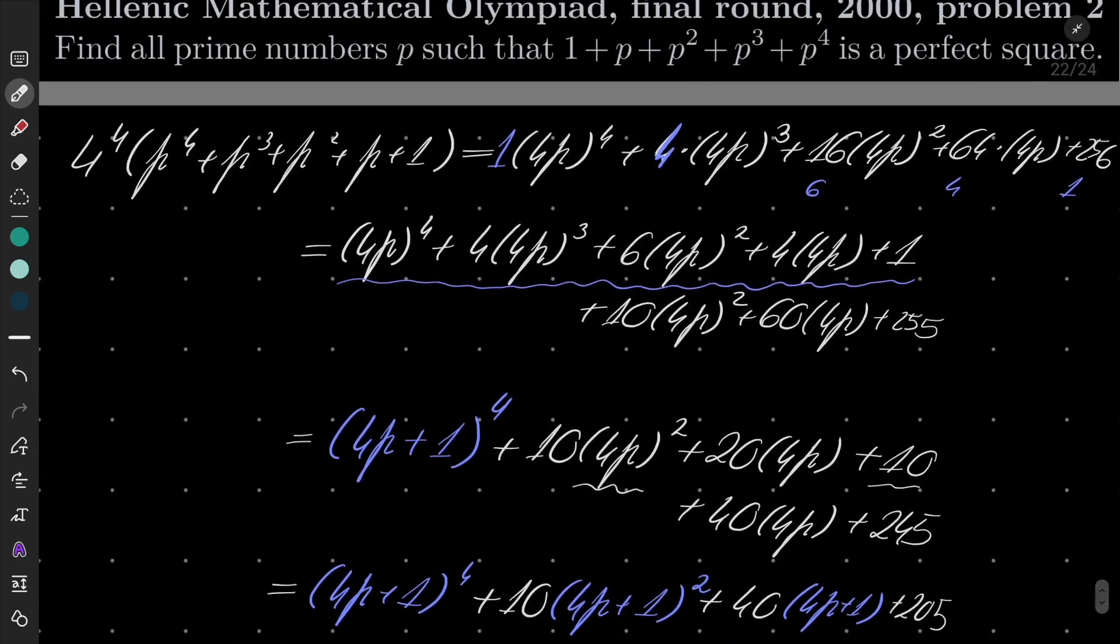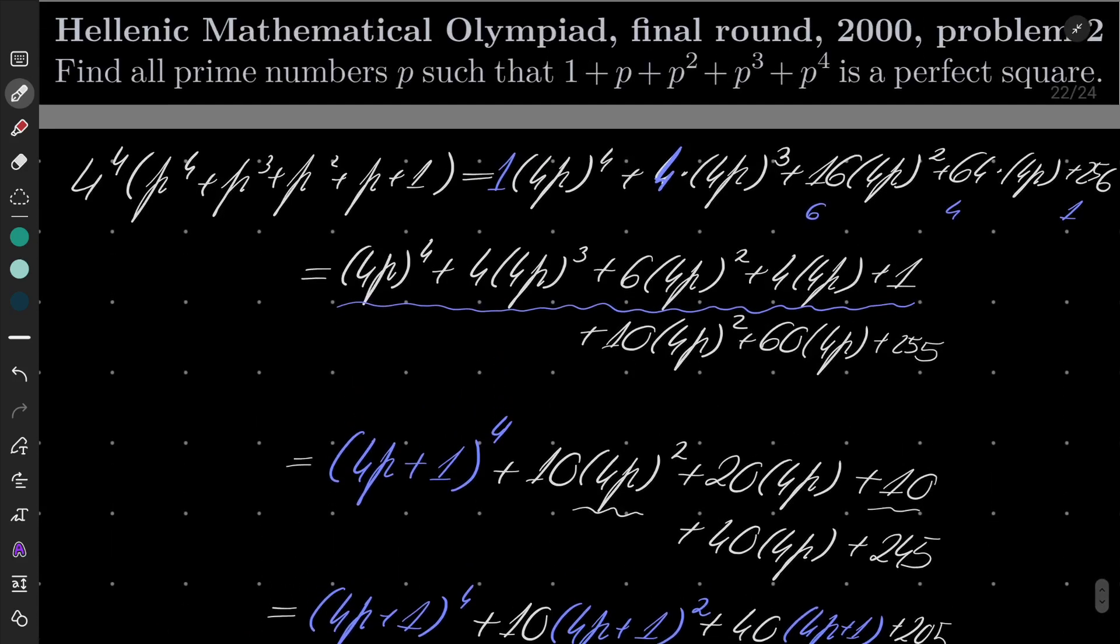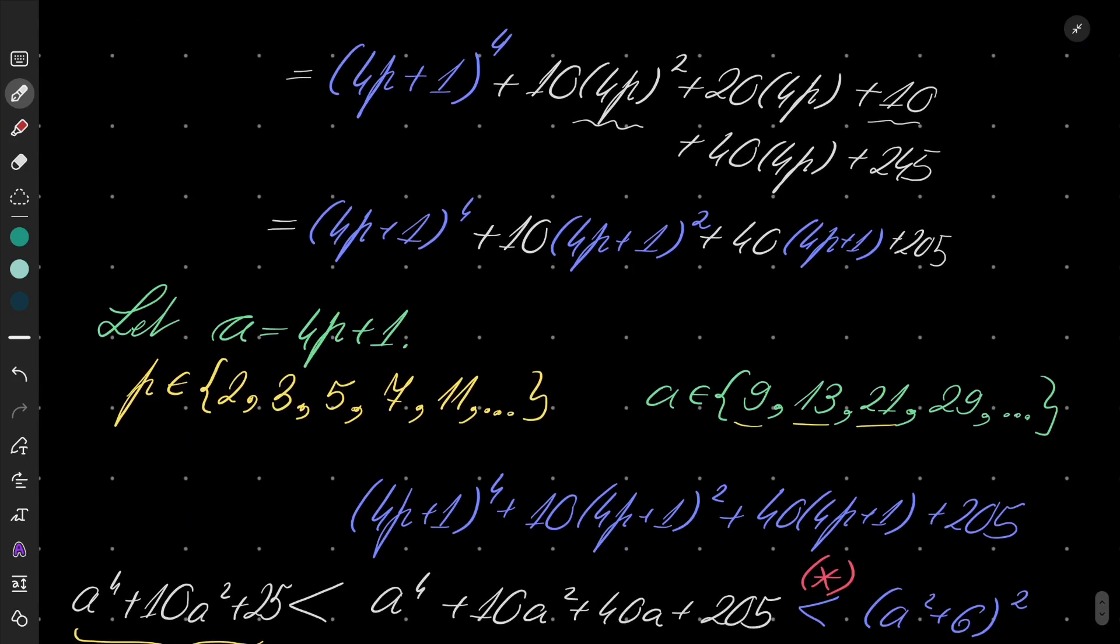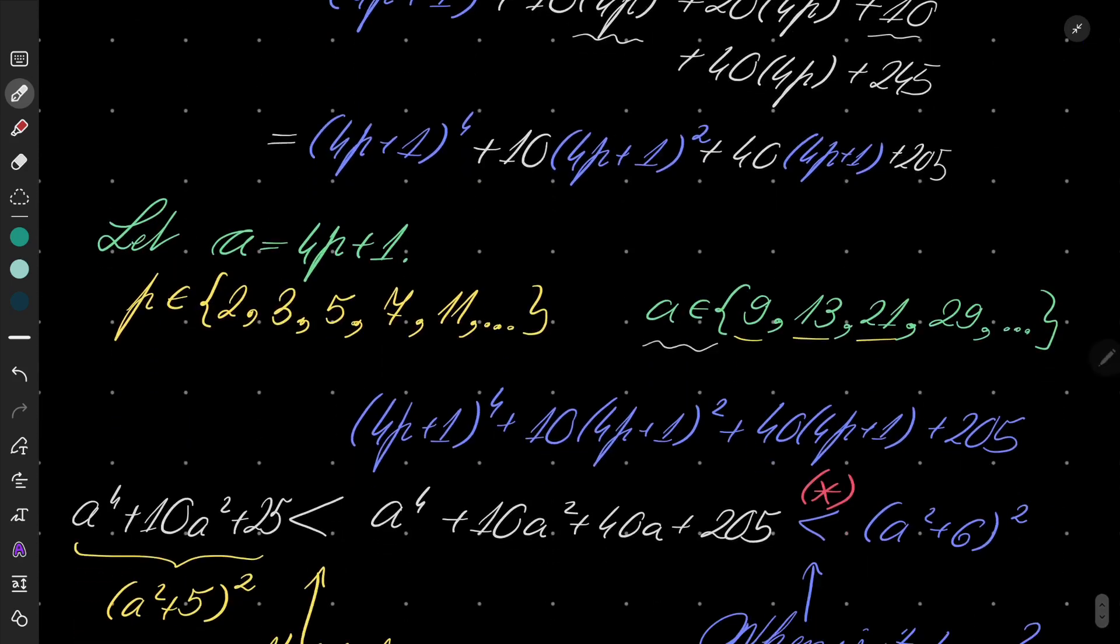And also, challenge for you, maybe, because we were considering only prime numbers. Well, there was no particular reason just to constrain ourselves to primes. Because our reasoning, we have used the property that p is prime only in one place, namely in this place.